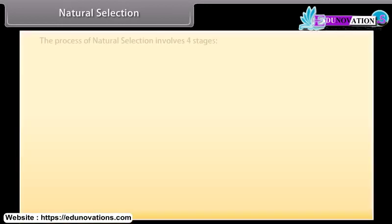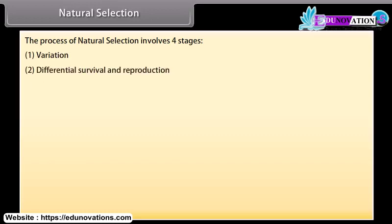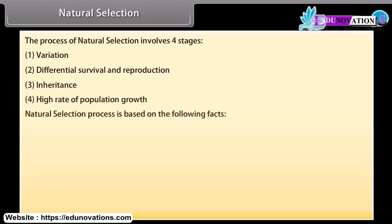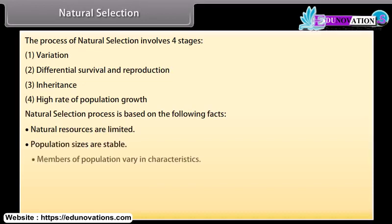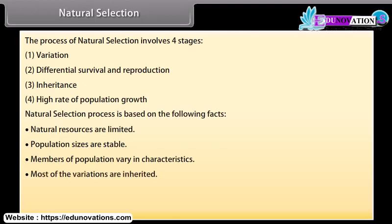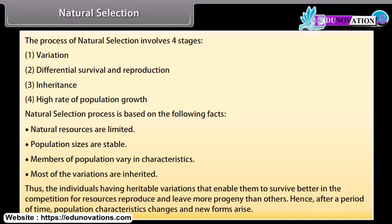The process of natural selection involves four stages: variation, differential survival and reproduction, inheritance, and high rate of population growth. Natural selection is based on the following facts: natural resources are limited, population sizes are stable, members of a population vary in characteristics, and most variations are inherited. Thus, individuals having heritable variations that enable them to survive better reproduce and leave more progeny. After a period of time, population characteristics change and new forms arise.